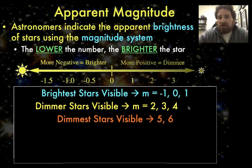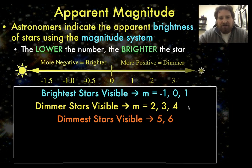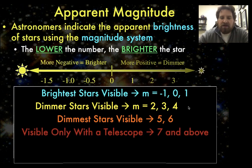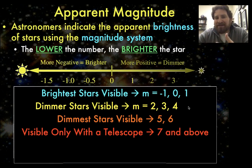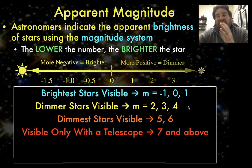Does that mean there are no stars with magnitudes greater than 6? No — there are stars with magnitudes much greater than 6, but you can't see them with the naked eye. You would need a telescope. Magnitudes 7 and above are only visible through a telescope, and the higher the magnitude, the bigger the telescope you need. For example, the Hubble Space Telescope, one of the most powerful telescopes ever built, can see stars of magnitude about 30, which is extremely dim.